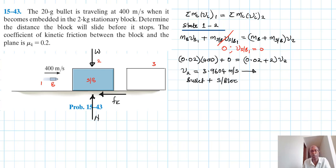So this we get a 3.9604 meters per second in this direction like so. This is bullet plus stationary block. Of course, the question is the distance it will slide before it stops. So now we are going to move from stage 2 to stage 3.